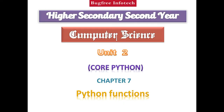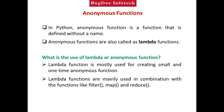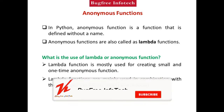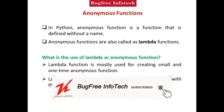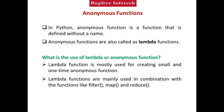First topic in this video: anonymous functions. In normal functions, we use the 'def' keyword and create a function name to define the function. But anonymous functions are different — we use the 'lambda' keyword instead of 'def', and the function has no name. So the concept of anonymous functions is that unlike normal functions, anonymous functions have no name.